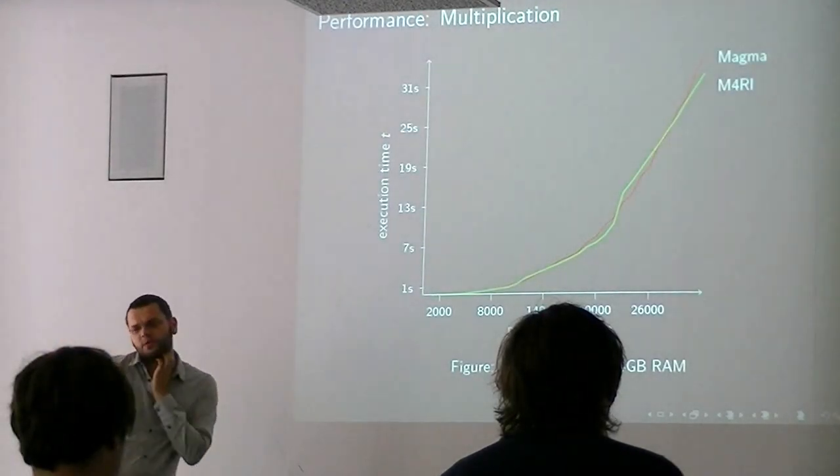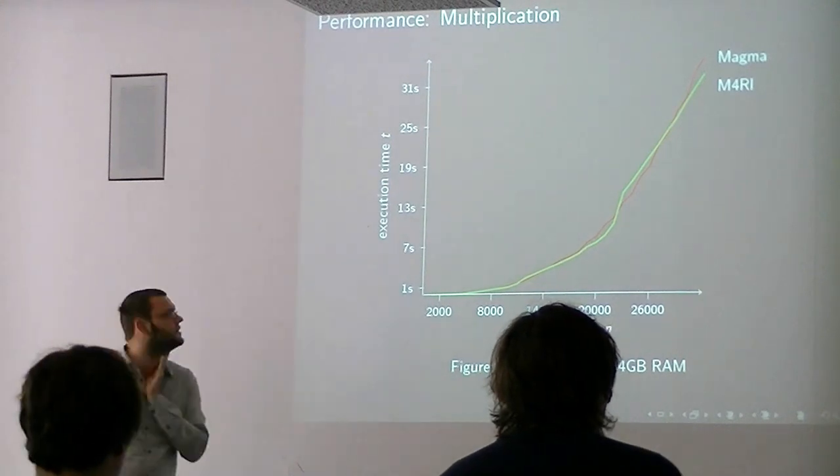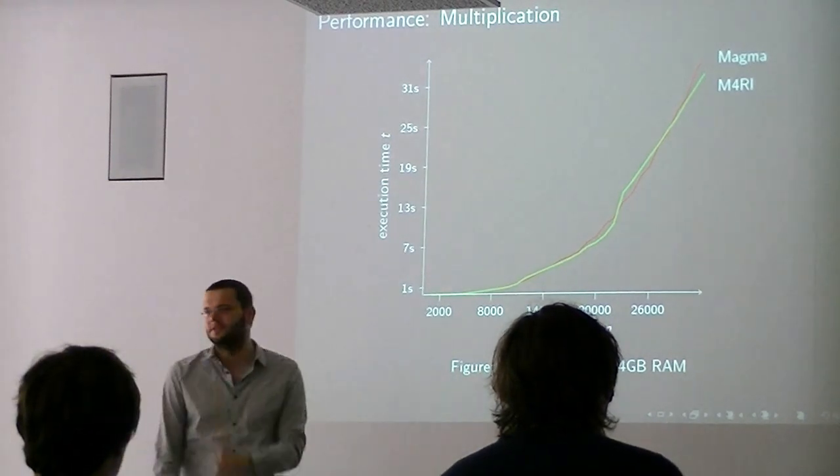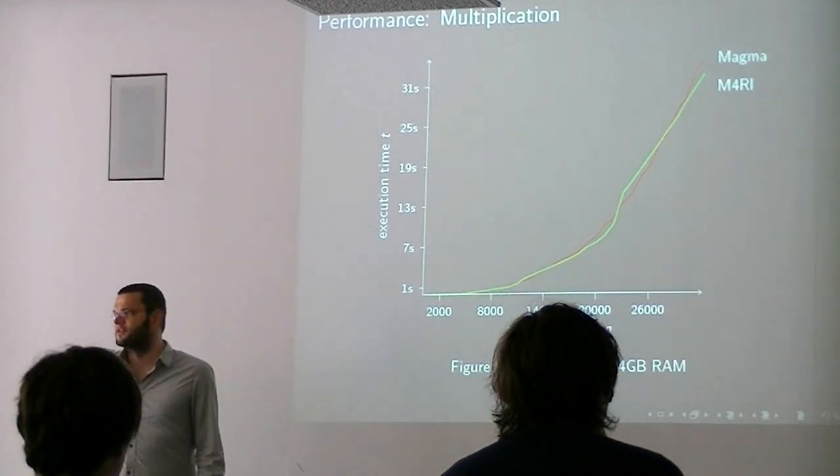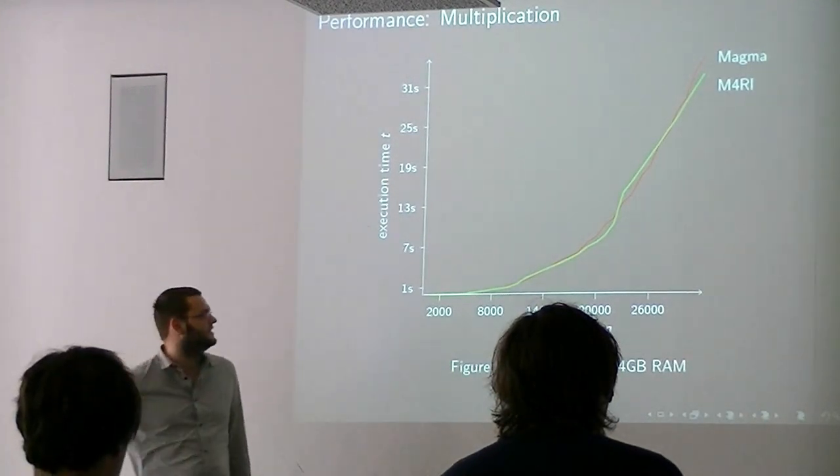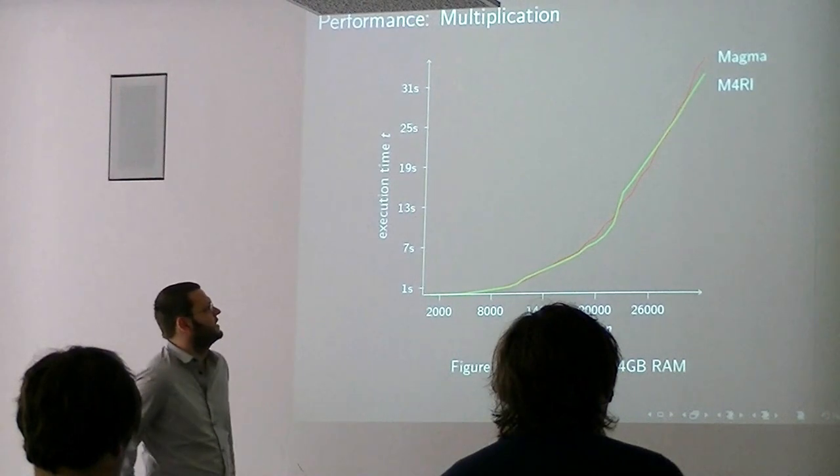So the algorithm simply is we take 2K, we generate two tables, we read two indices, and we add two things. That's the whole algorithm. But because it is all about cache access, this is a lot faster than just doing one Gray code table. In our implementation we do eight tables, and there isn't much difference between 4 and 8. We didn't try 16.